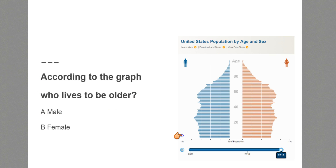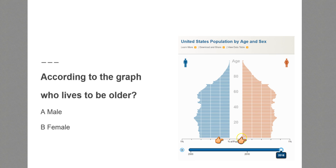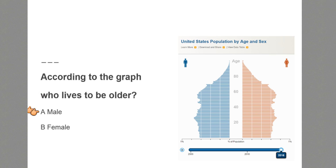This chart is called a population pyramid. It's showing the United States. You can see the percentage of the population at the bottom, with ages going up — 20, 40, 60, 80. Females are on the right, males are on the left in blue. The question is: according to this graph, who lives to be older — male or female?